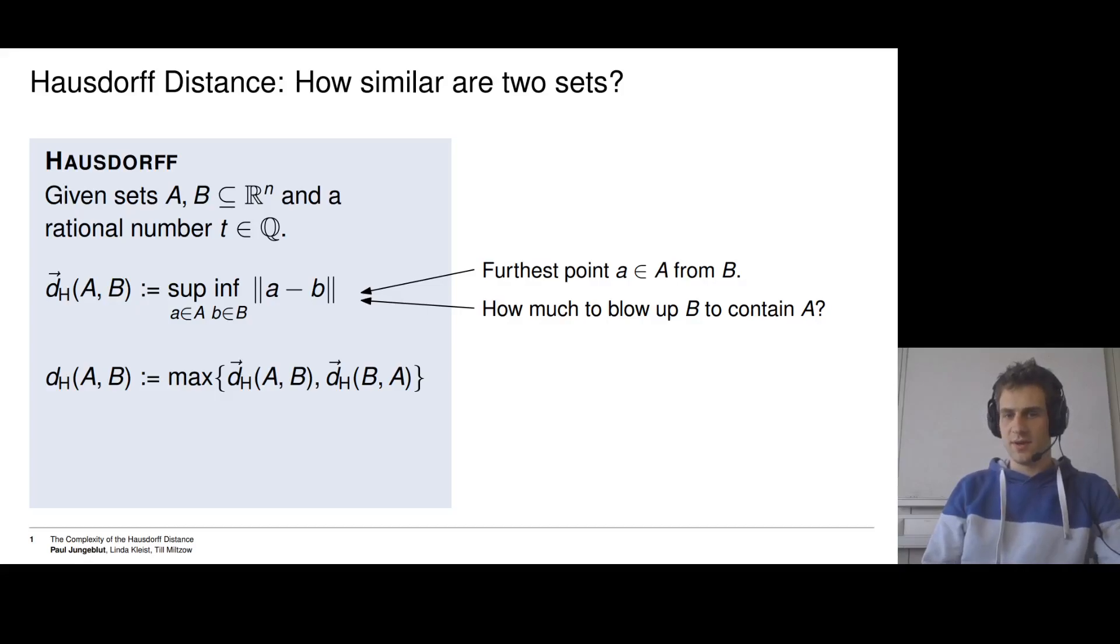This is asymmetric, so we define the undirected Hausdorff distance to be the maximum between the two directed variants: the directed Hausdorff distance between A and B, and the one between B and A. And now the decision problem is: given this rational number t, is the Hausdorff distance between A and B at most t?